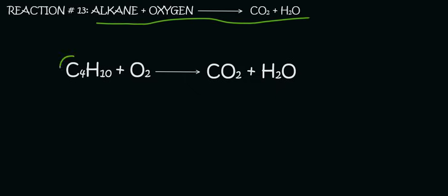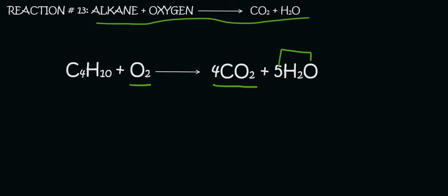So have a look here. You've got 4 carbons there, but only 1 carbon over here. So we're going to have to add a 4 in front of the CO2. Now what we do is we have a look at the hydrogens. We've got 10 on this side, but only 2 over here. So we'll have to add a 5 in the front there because 5 times 2 is 10. And then lastly, we can check the oxygen. So on this side, we've got 2. But on this side, we've got 8 over here because 4 times 2 plus another 5. So that gives us 13 oxygens.